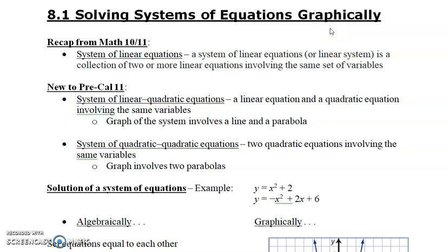In Math 10, we did this with linear equations. We had two linear lines and they intersected at one point. Sometimes they overlapped completely — that was all solutions, the same line. And then we had no solution when we had parallel lines. But the majority of the time, we had two linear lines that intersected at one point, and that was the case when we had different slopes.